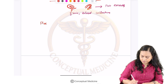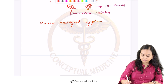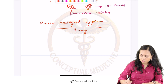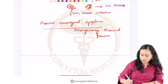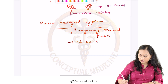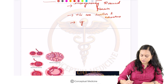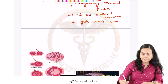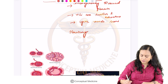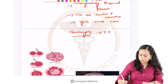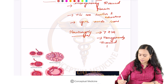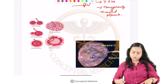There can be placental mesenchymal dysplasia also, where there is inhomogeneously thickened placenta. The villi are swollen and edematous and there are cystic vessels seen. In placental mesenchymal dysplasia, the thickness is more than 4 centimeters.